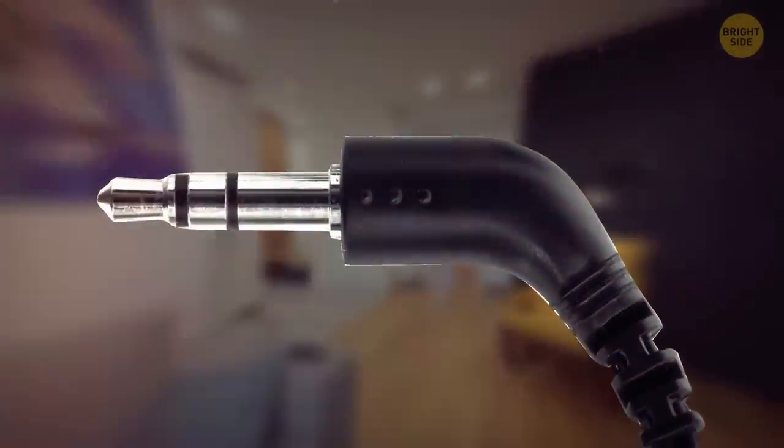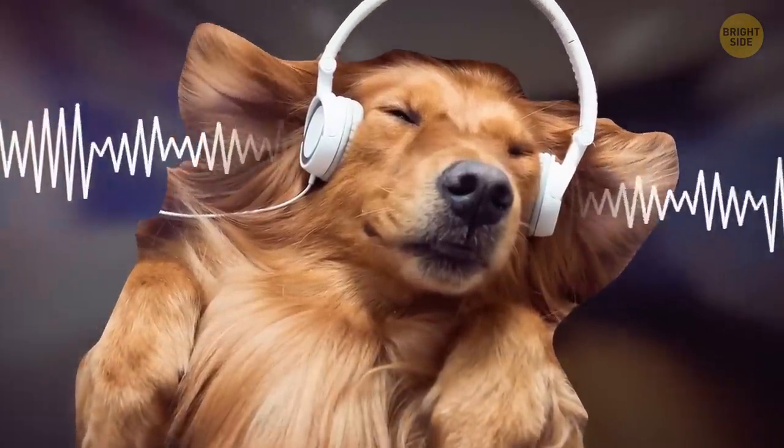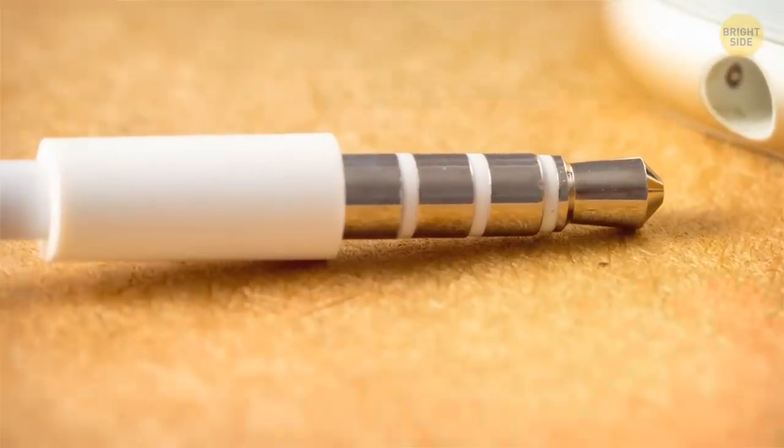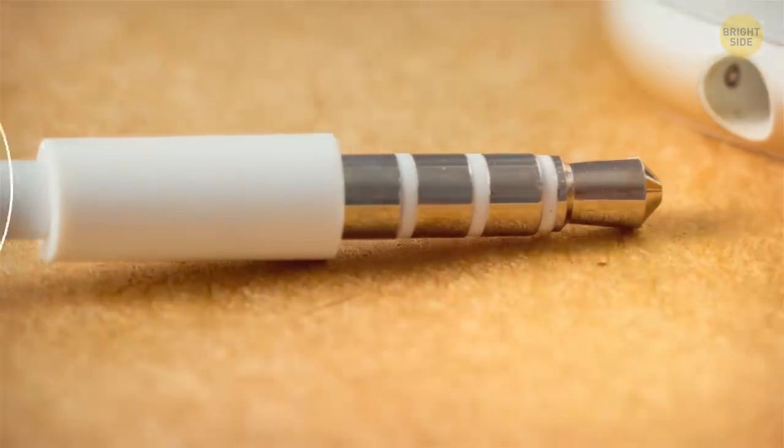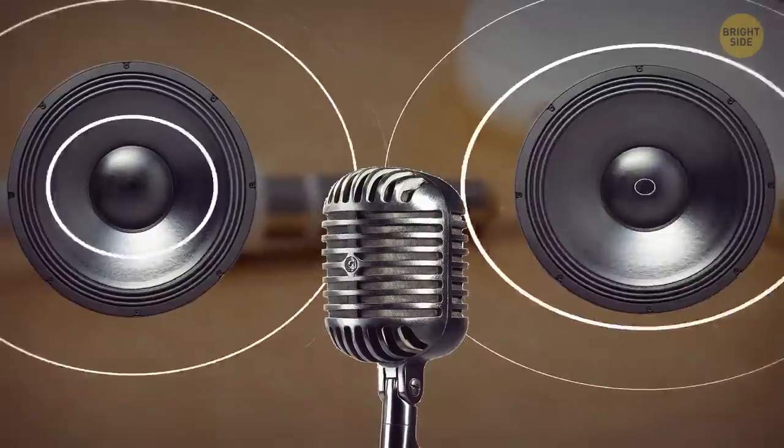If there are two rings and three sections, then there is a basic one to cancel out interference and the other two for either ear. Three rings and four sections mean that you have a set: one basic, one for either of the ears, and the last one is the microphone pin.